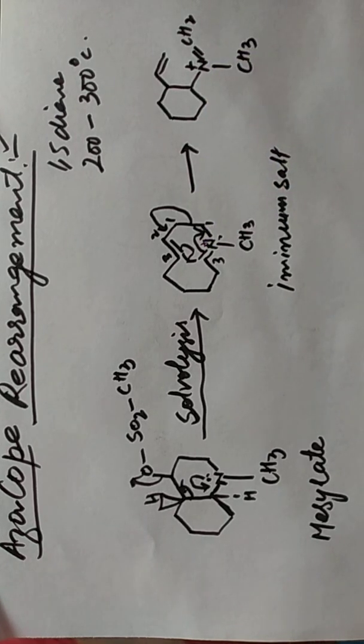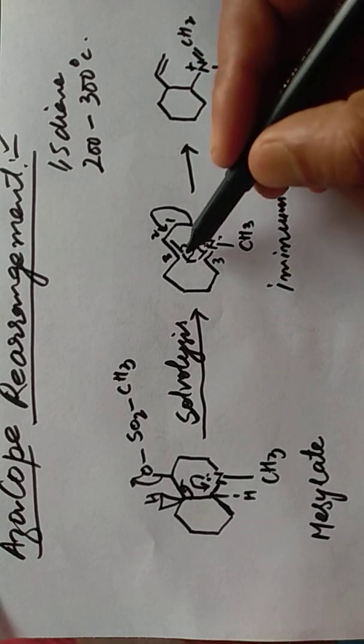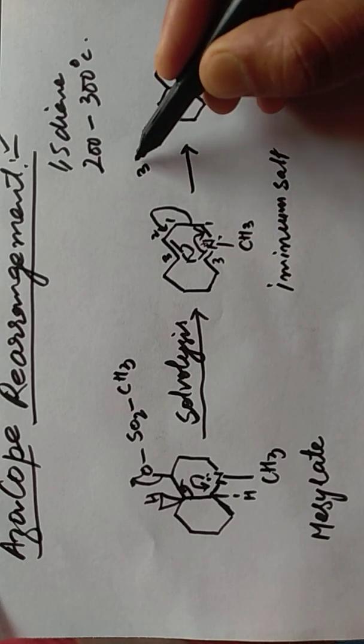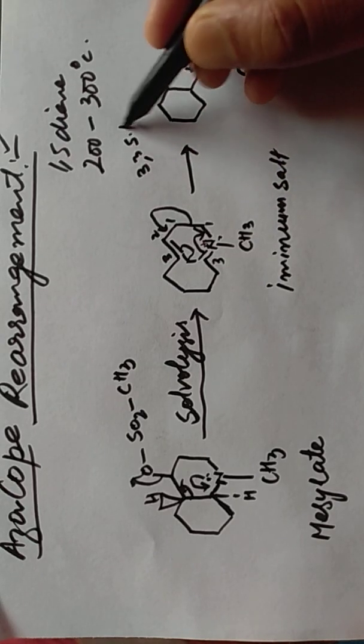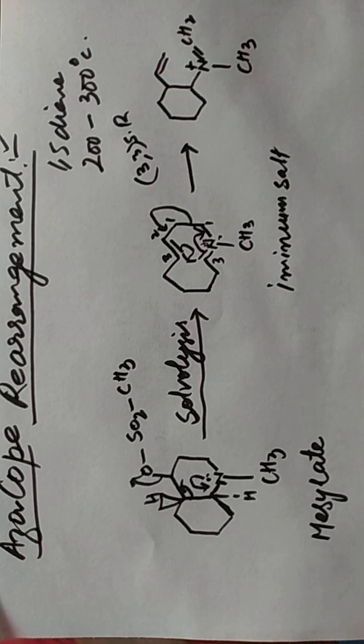Right, the new sigma bond is formed between these carbon atoms, third carbon atoms. So this is a 3,3-sigmatropic rearrangement, right?